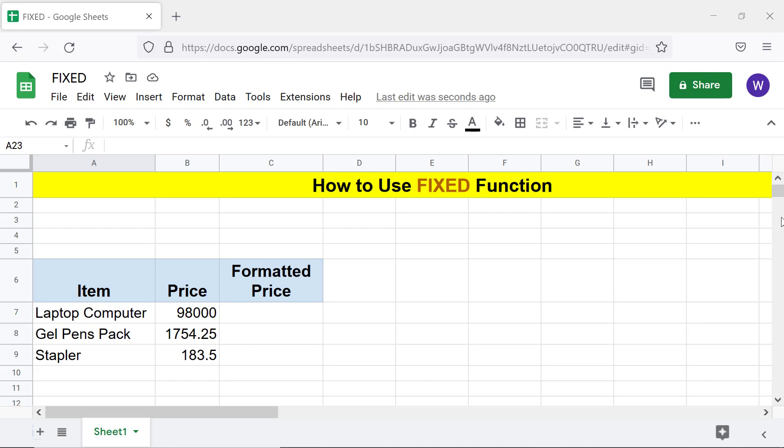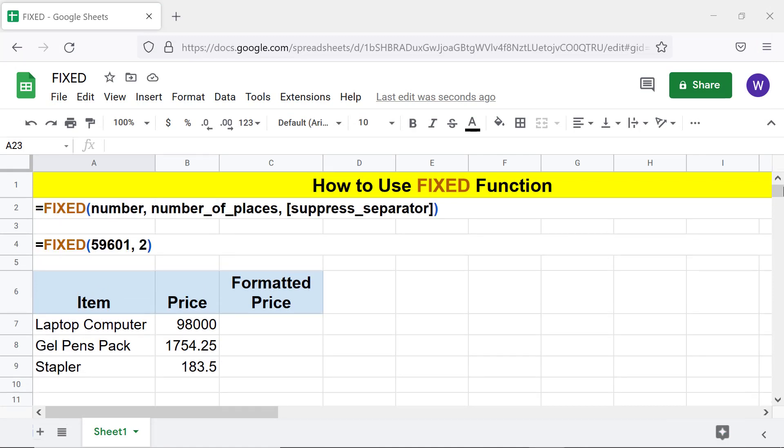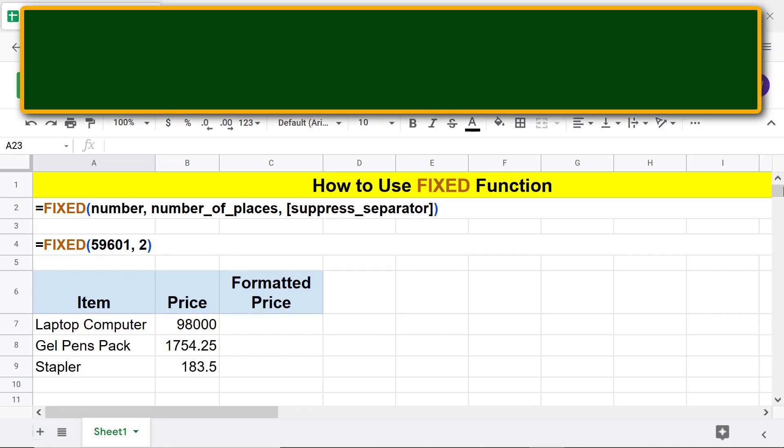Here is an example. Number is the number you want to format. Number of places is the number of decimal places. Suppress separator is optional; its default value is 0, which means the FIXED function displays the thousands separator. Set this attribute to 1 if you do not wish to display the separator.